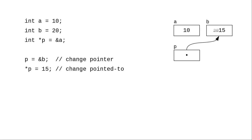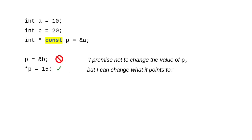You can use the const specifier to make promises not to change these things. Putting const here says, I will not change the value in p. I will never point it to another location. But I can change what it points to. You read this declaration as, p is a constant pointer to an integer.